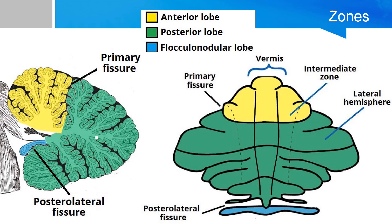There are three cerebellar zones. In the midline of the cerebellum is the vermis. On either side of the vermis are the intermediate zones, and lateral to the intermediate zones are the lateral hemispheres. There is no difference in gross structure between the lateral hemisphere and the intermediate zones.